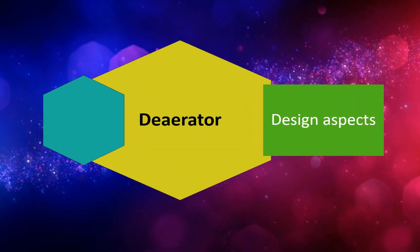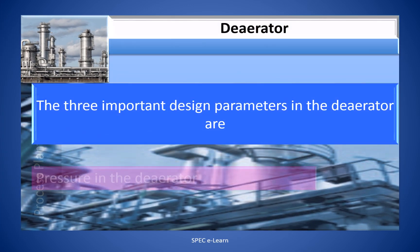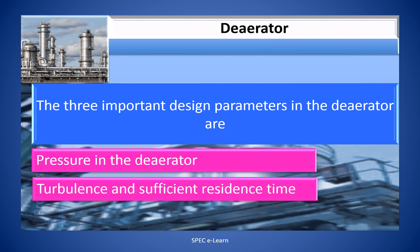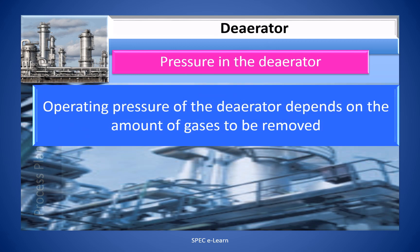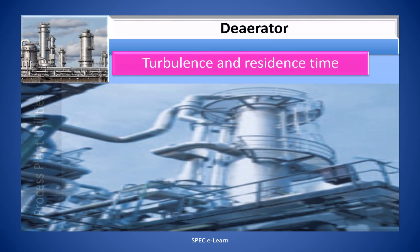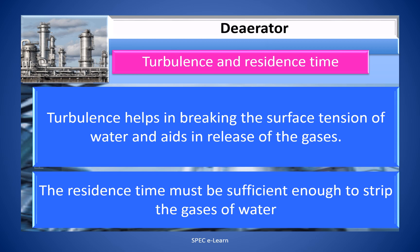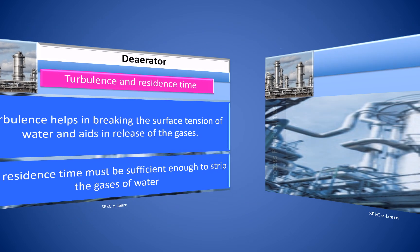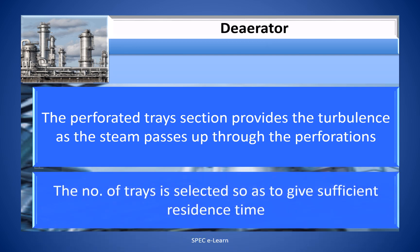De-aerator design aspects. Three important design parameters in the de-aerator are: pressure in the de-aerator, turbulence and sufficient residence time, and steam requirement. Regarding pressure: the operating pressure of the de-aerator depends on the amount of gases to be removed. For very low levels of oxygen concentration, low pressure slightly above atmospheric pressure in the range of 0.2 to 0.5 bar g is preferred. Regarding turbulence and residence time: turbulence helps in breaking the surface tension of water and aids in release of the gases. The residence time must be sufficient enough to strip the gases from the water. Perforated trays provide turbulence as the steam passes up through the perforations, and the number of trays is selected to give sufficient residence time.